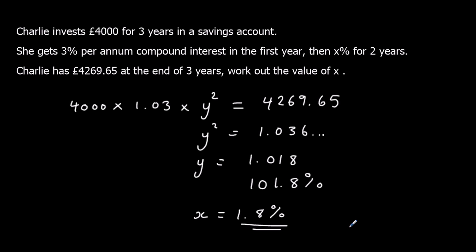And again, you can check this. So if you take 4,000, times by 1.03, times by 1.018 squared, you should get 4,269.65p.